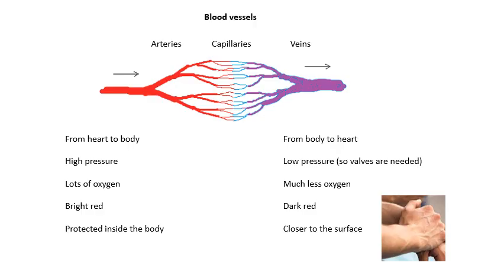Veins go from the body to the heart. The blood pressure is low, which is why they have valves — more on that shortly. The blood has less oxygen, so it's a dark red colour. Veins are closer to the surface. Capillaries are between the arteries and the veins, and they actually take the blood to and from the cells of your body. They are lots and lots of very, very thin, small blood vessels which take the blood to where it's needed.